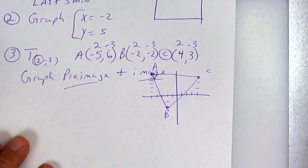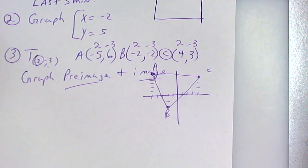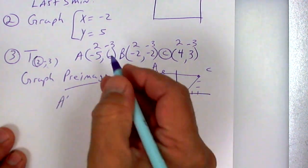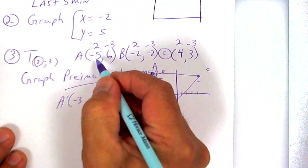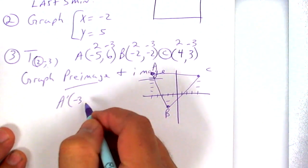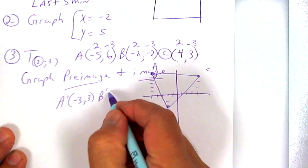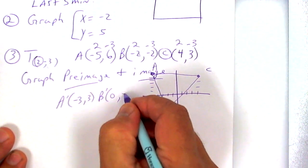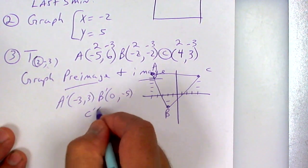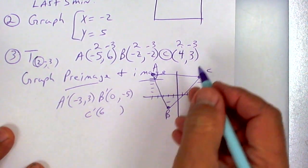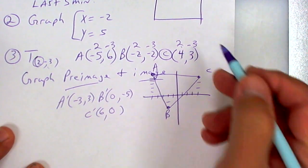Remember, don't forget to keep up with your Carnegie — that's going to be due sometime in October, check the portal, I think it's October 11th. So point A prime would be negative three, three, because negative five plus two equals negative three. Point B prime would be zero, negative five. And point C prime would be six, zero, because three minus three equals zero.